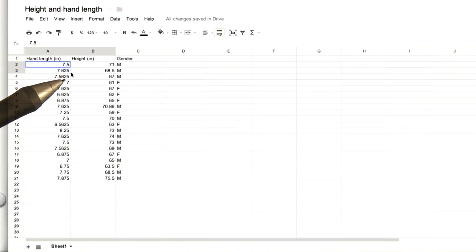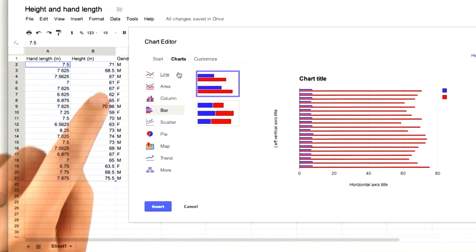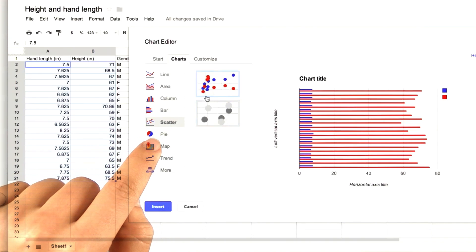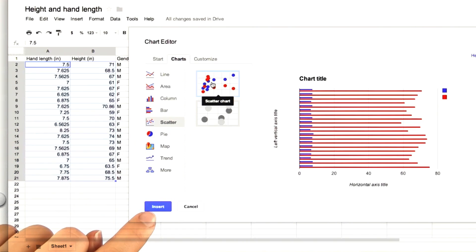If we highlight the data, and then go up here to insert chart, go to charts, and select scatter. And we need to click here on scatter chart, and then click insert.